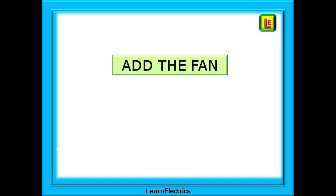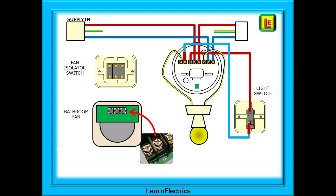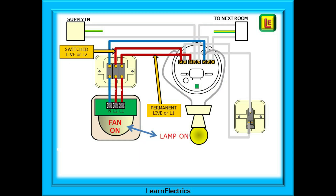Now we can look at adding the fan to the circuit. We're happy that all is good with the existing lighting circuit, so let's choose a position for the fan and isolator switch. On this drawing I've greyed out the existing wiring so you can better see the new wiring that we add.